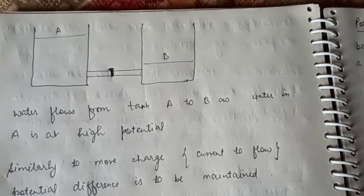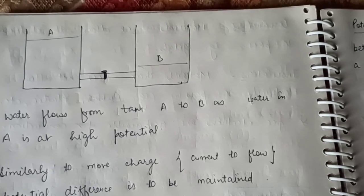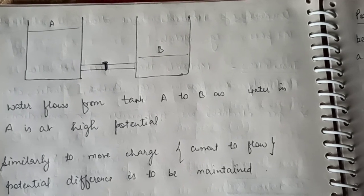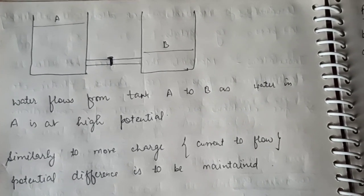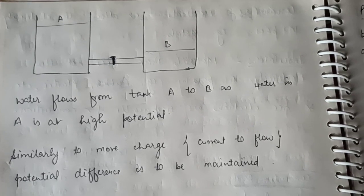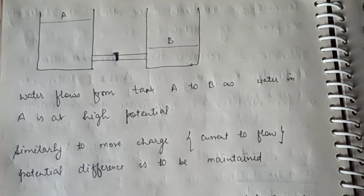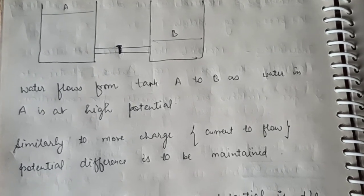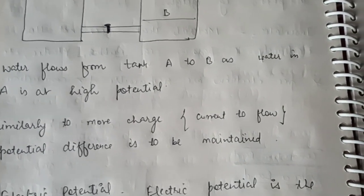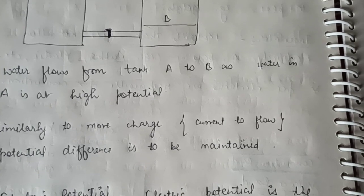The cell is responsible for conduction — electrons move under the influence of the cell and thus current flows. Let us take the example of two tanks, Tank A and Tank B. Water in Tank A is at a higher level and Tank B at a lower level. If we open the valve, water flows from Tank A to Tank B because the potential energy of water in Tank A is higher. Similarly, for current to flow, a potential difference must be maintained, and this is maintained using a cell or battery.